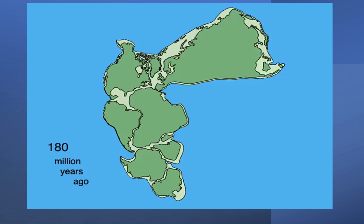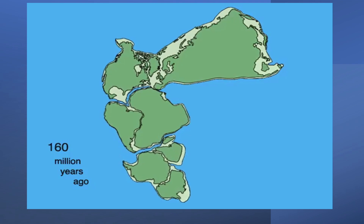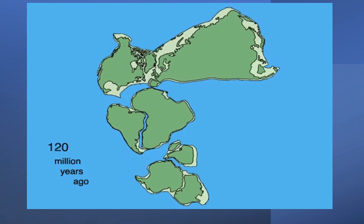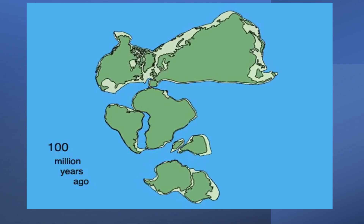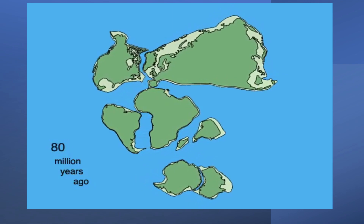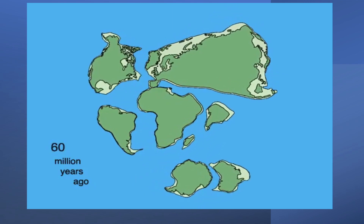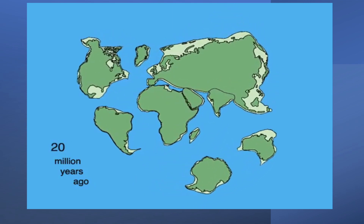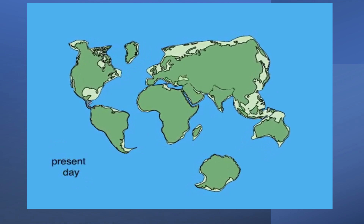The movement of tectonic plates also destroyed biodiverse reef populations that typically inhabit plate margins where the plates collide. The formation of these supercontinents due to plate tectonics also led to the formation of superoceans such as Pantalassa, which lacked ocean circulation, leading to our next cause.